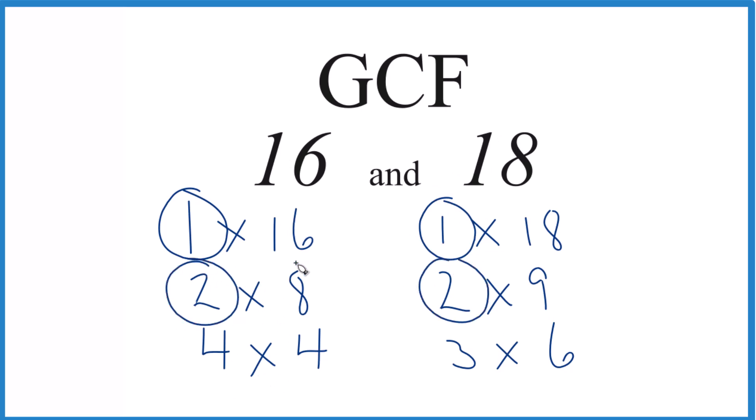4, 16, 8, 4. It looks like the greatest common factor that goes into 16 and 18 is just 2. So, in answer to our question, the GCF for 16 and 18 is 2.